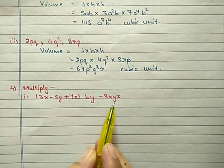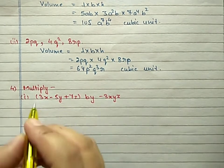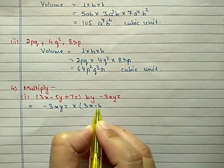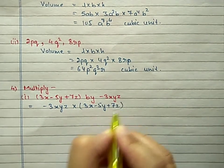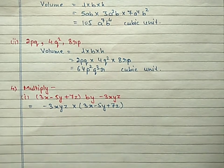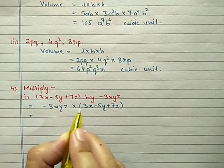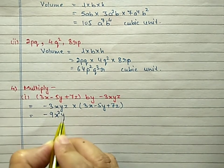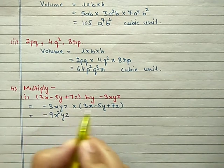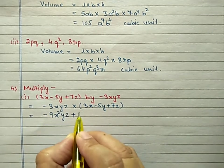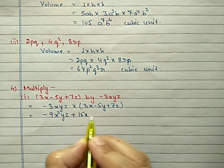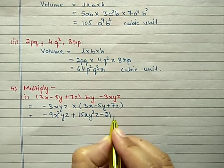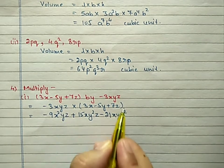Question number 4: Multiply the following. This is a trinomial and this is a monomial. We write −3xyz multiplied by (3x − 5y + 7z). Multiply −3xyz with the first term: minus and plus gives minus, 3 × 3 = 9, so −9x²yz. Second term: minus × minus gives plus, 3 × 5 = 15, so +15xy²z. Third term: minus 3 × plus 7 gives −21, so −21xyz².